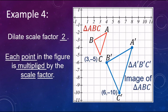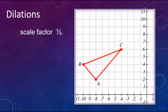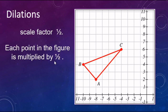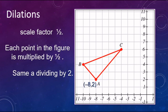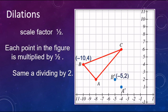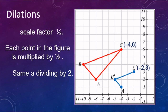You're just multiplying by whatever the scale factor is — in this case, two. Now for a scale factor of one-half, each point is multiplied by a half, which is the same as dividing by two. So at negative eight, two — divide by two gives negative four, one: A prime. At negative ten, four — divide by two gives negative five, two: B prime. And at negative four, six — divide by two gives negative two, three: C prime. Connect the dots — there's your image of triangle ABC after a dilation with scale factor one-half: A prime, B prime, C prime.